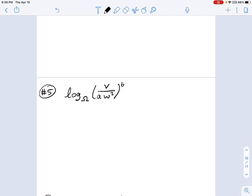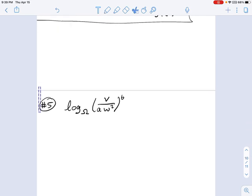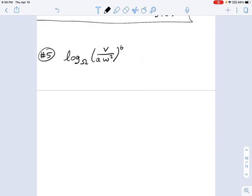Logarithm base omega of v over aw squared to the 6th power. So there's a lot going on here. One thing that might be distracting when you're looking at this is that base omega. Like, why is that even there, right? Sometimes these things are weird. It's not always a variable like b or 7 or a number. Sometimes you just get something weird. So we're going to use that weird symbol in this logarithm.